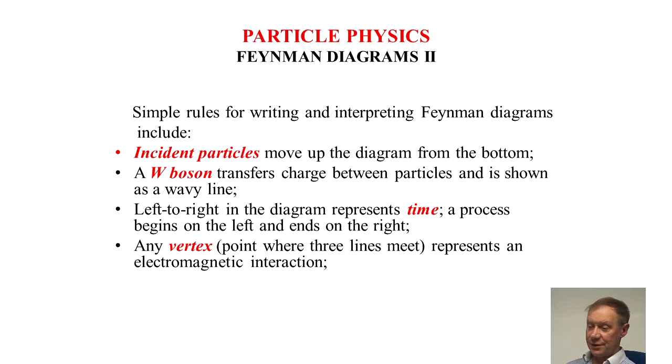Incident particles move up from the diagram from the bottom. A W boson transfers charge between particles and is shown as a wavy line. Left to right in the diagram represents time. A process begins on the left and ends on the right. At any vertex point where three lines meet represents an electromagnetic interaction.